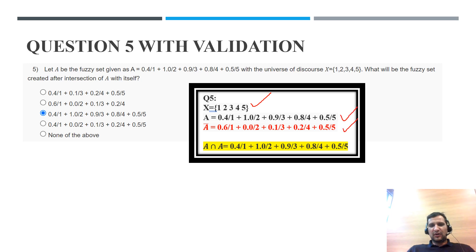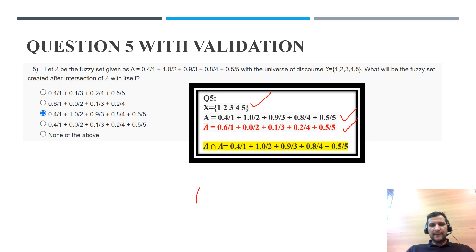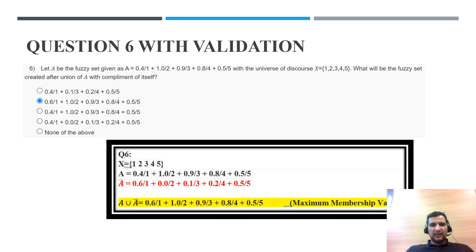Question 5 asks: what will be the fuzzy set created after intersection of A with itself? For A intersection A: 0.4 with 0.4, 1 with 1, 0.9 with 0.9, 0.8 with 0.8, and 0.5 with 0.5. From the idempotent property, A intersection A equals A — there is no change. The correct option is C.